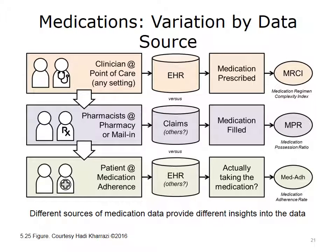This diagram shows that various medication data sources provide different derived variables. At the point of care, when a physician prescribes a medication, the prescription information is stored in an EHR system and can be used to calculate the MRCI for individual patients or subgroups. When the patient fills the prescription at the pharmacy, an insurance claim is generated, and the filled medication information can be used to measure the MPR. When a clinician reconciles medication records with a patient, the medication reconciliation record stored in an EHR can be used to measure the actual adherence of the patient to the medication regimen.